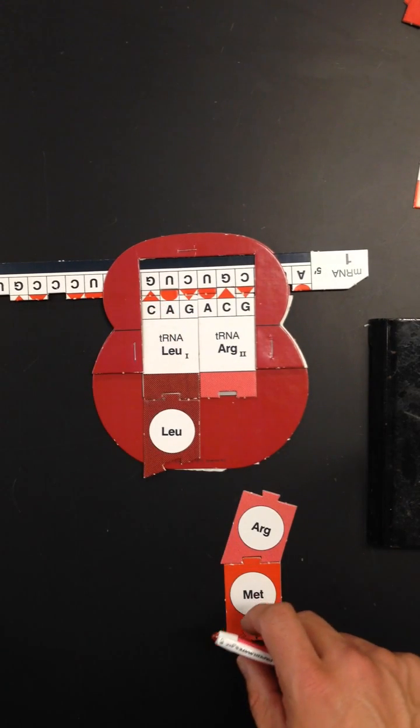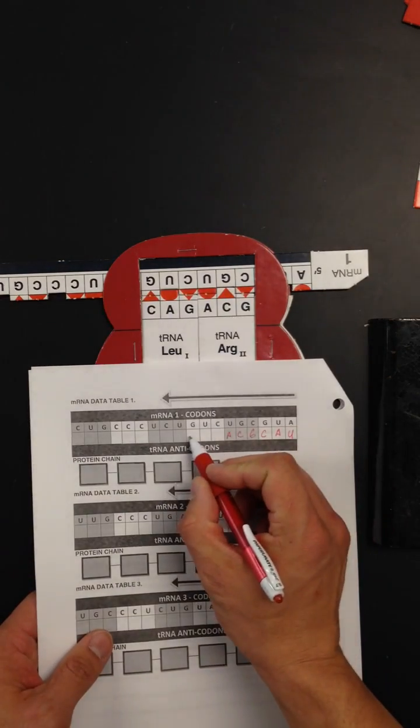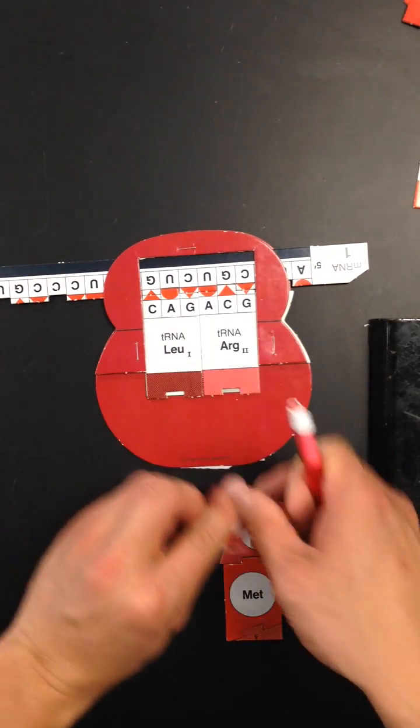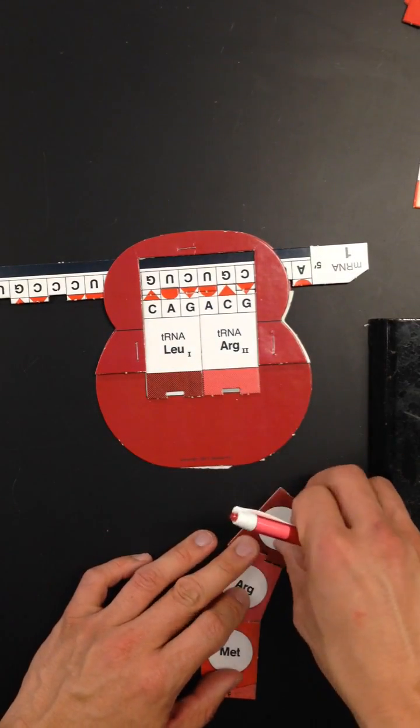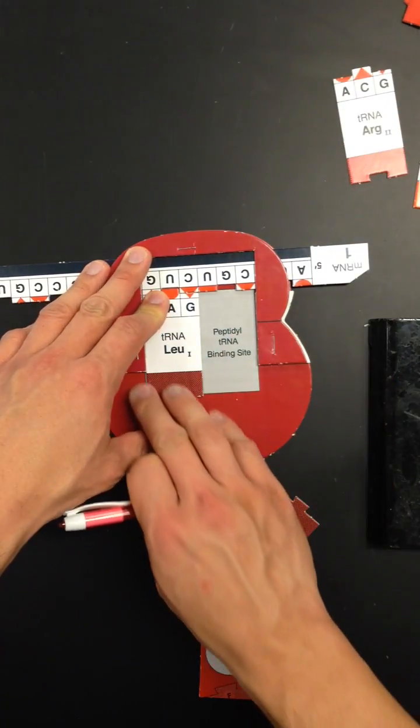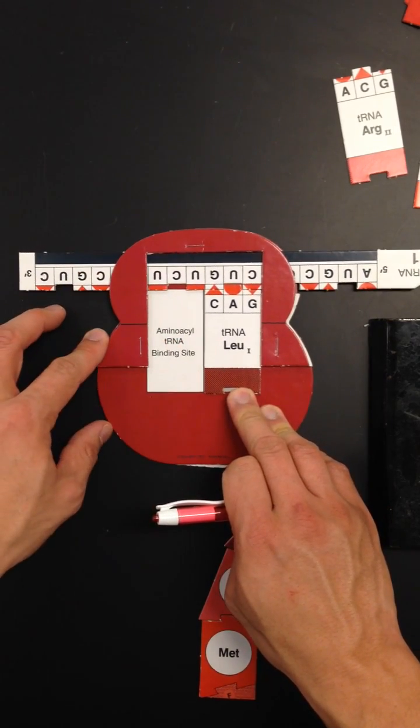Once I have leucine or the transfer RNA for leucine in there, I'm going to write my anticodon. Then I'm going to write the amino acid. Then I'm going to take my amino acid, bond it, remove the first transfer RNA out of the peptidyl site, and then I'm going to feed it down again. I'm going to continue to do this until I finish this strand.